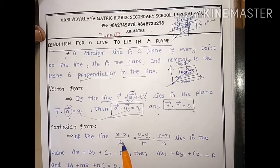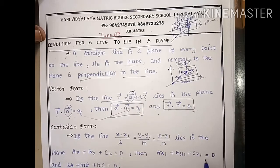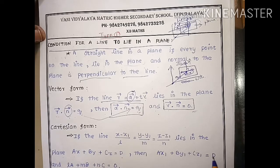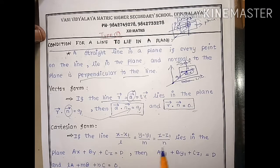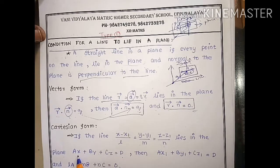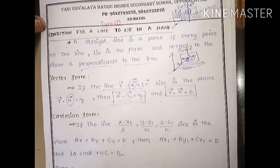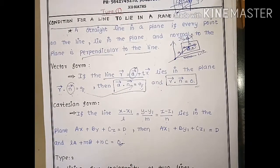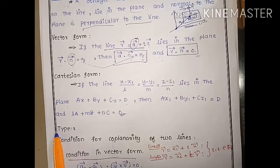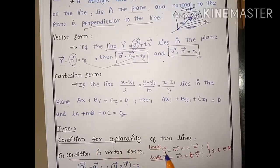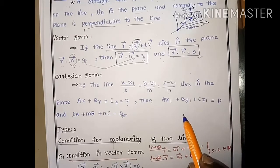For the Cartesian equation: if the line in Cartesian form lies in the plane in Cartesian form, substitute the point (x1, y1, z1) into the plane equation. So ax1 + by1 + cz1 = d, with the same value d. Also, the normal direction ratios l, m, n must satisfy the perpendicularity condition.